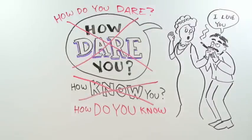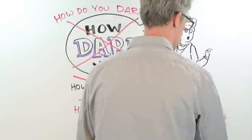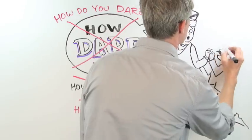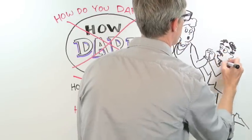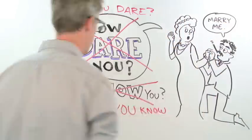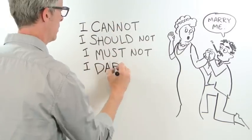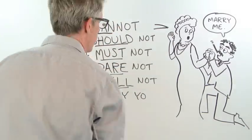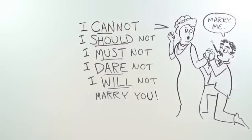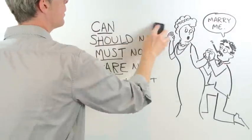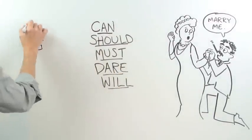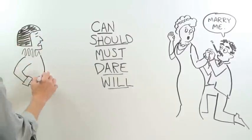In the history of English, dare used to belong to a special class of verbs that included words like can, will, must, and should. They're now called modal verbs, and they express things like likelihood, possibility, and permission. They don't behave like other verbs in various ways.